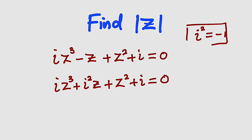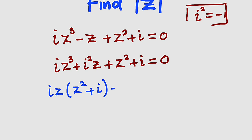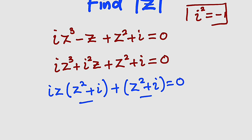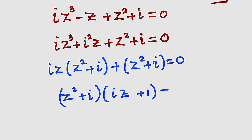Now we can factorize them in pairs. From the first two terms, we have iz in common, so we bring iz outside. Inside we have z² + i. Then from the other pair we still have z² + i, and this is equal to zero.